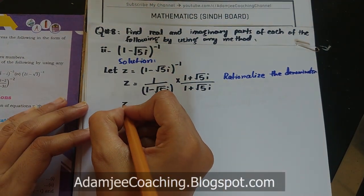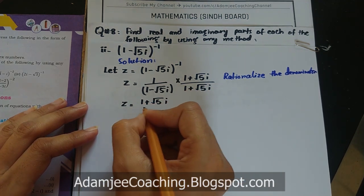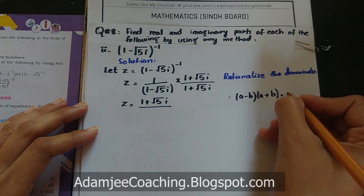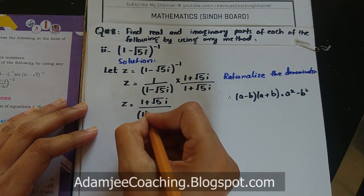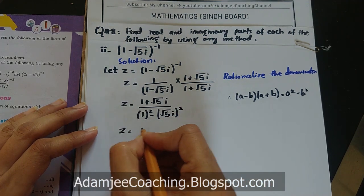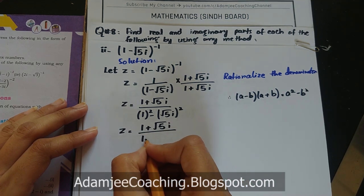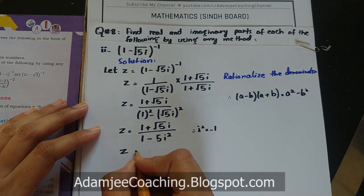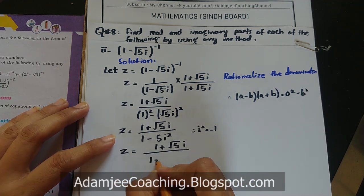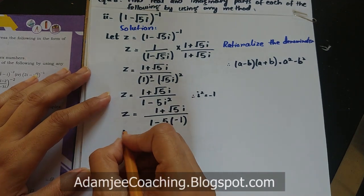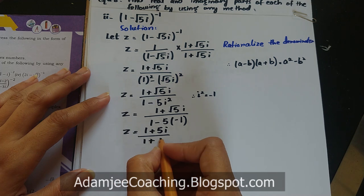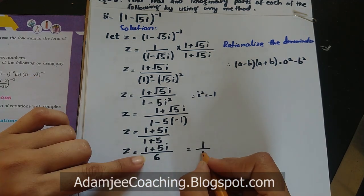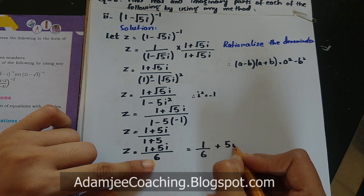z = 1×(1 + √5·iota) upon (1 - √5·iota)(1 + √5·iota)۔ (a-b)(a+b) = a²-b² formula apply کریں۔ a = 1، b = √5·iota۔ Denominator = 1² - (√5·iota)² = 1 - 5·iota² = 1 - 5(-1) = 1 + 5 = 6۔ تو z = (1 + √5·iota)/6۔